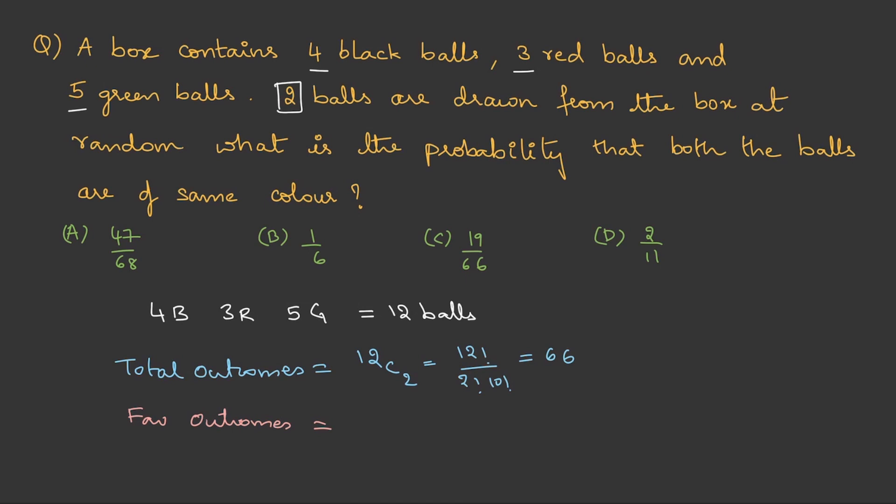That is they are saying that the balls which you are selecting should be of same color. So if I take blue balls both should be blue. If it is red both should be red. If it is green both should be green. So from 4 blue balls if I take 2 that is 4C2, or from the 3 red I can choose 2 that is 3C2, or from the 5 green I can choose 2, so 5C2.